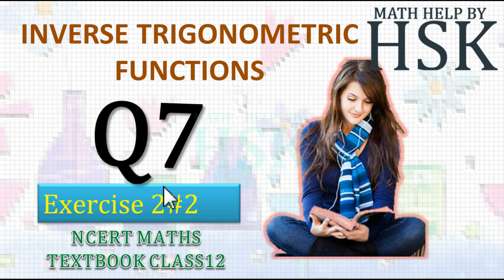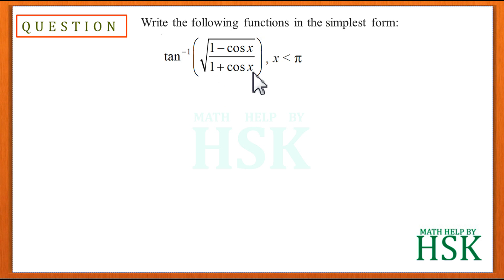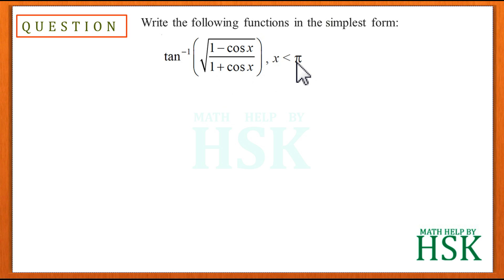Taking question number 7 of exercise 2.2 on inverse trigonometric functions. The question asks us to write the following function in the simplest form: tan inverse of square root of (1 minus cos x) upon (1 plus cos x). Note that x is less than pi because this expression is only valid under that condition.